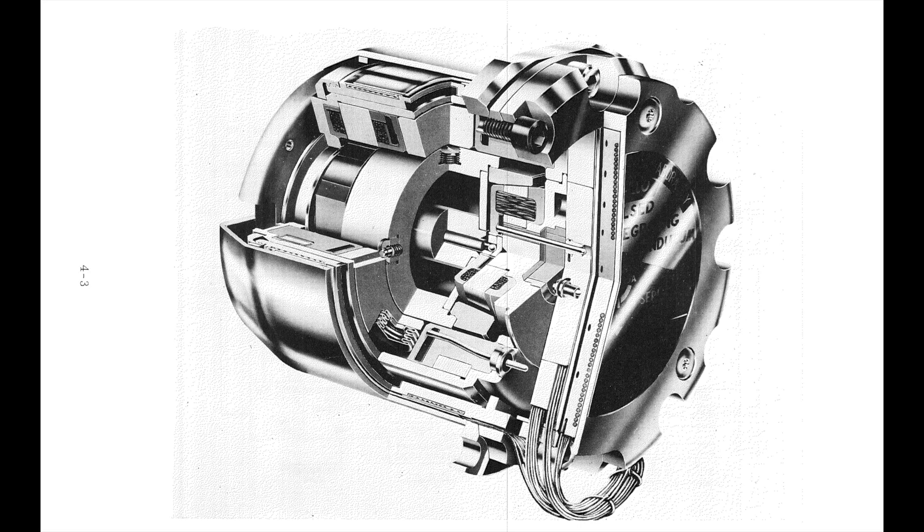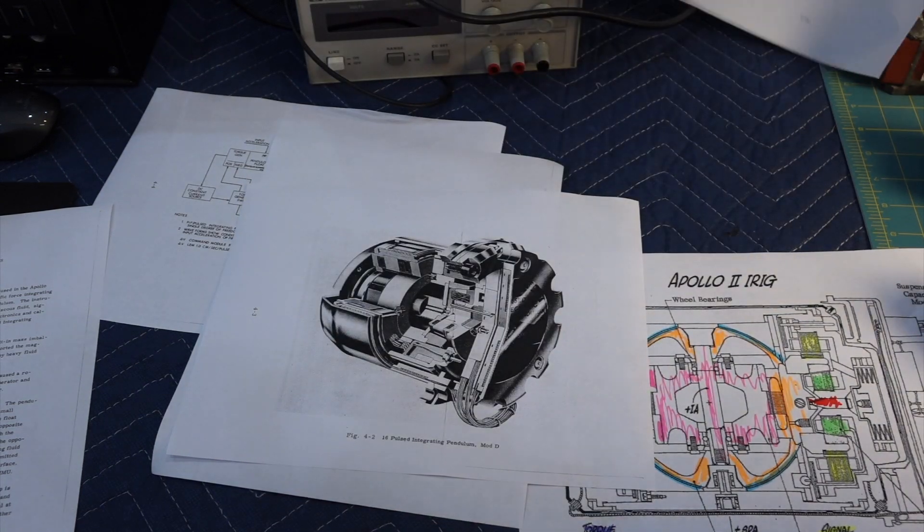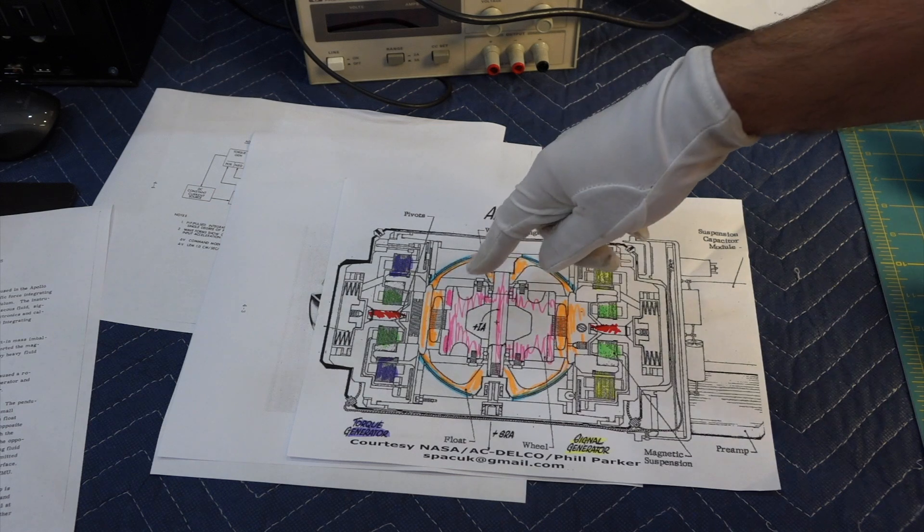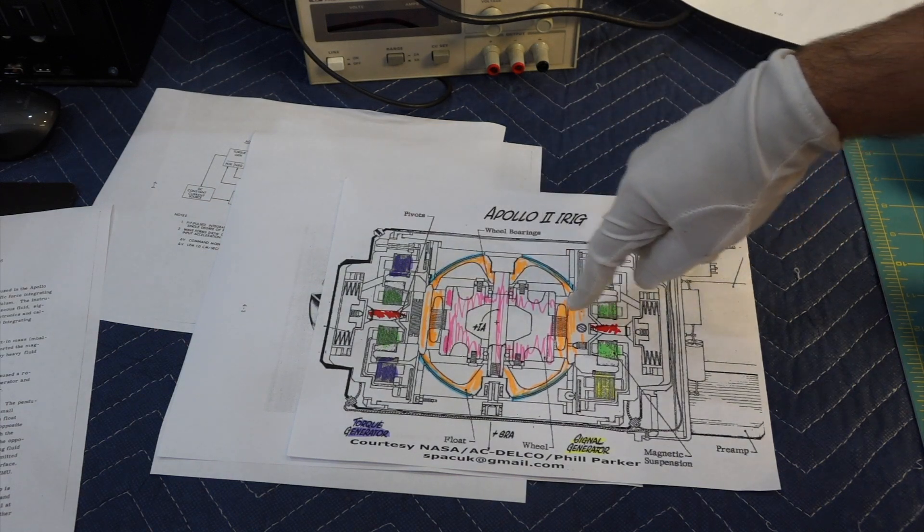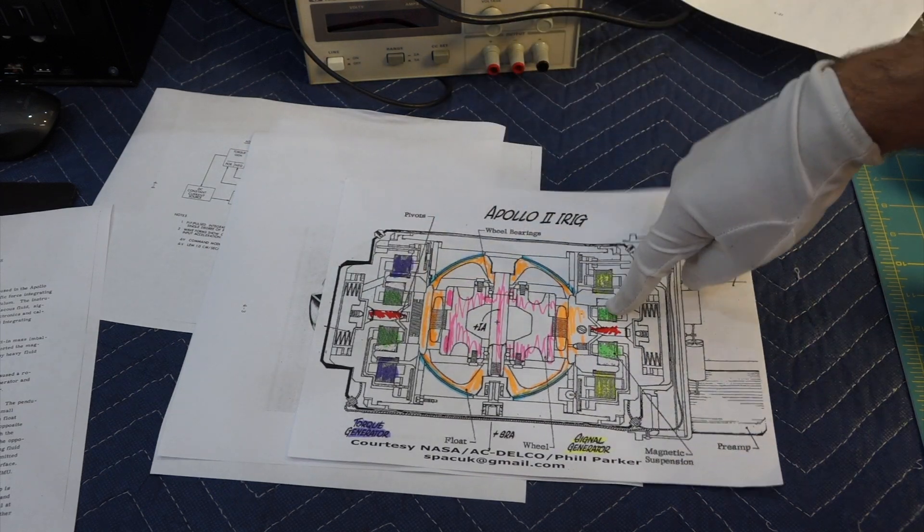So you can see the resemblance with the gyro that looks like that. And actually there is a lot of things that are similar. The gyro is a beryllium sphere with a gyro in it, in a magnetic suspension. And on one side there is a position sensor, and on the other side there's a little motor.